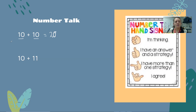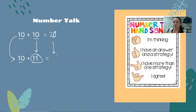We can use our doubles fact of 10 plus 10 to help us add 10 plus 11. I see that 11 is one more than 10, so my answer is going to be one more than 20. Shout it out when you know it — 10 plus 11 is 21.